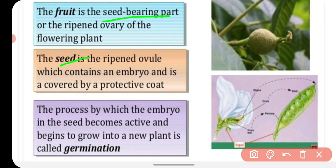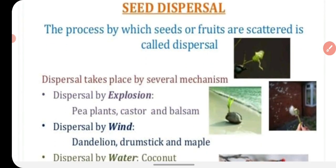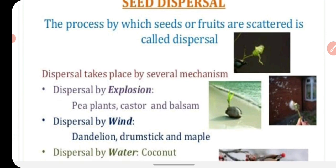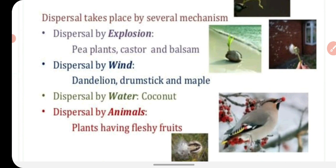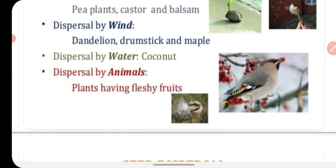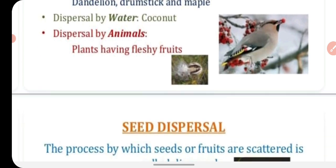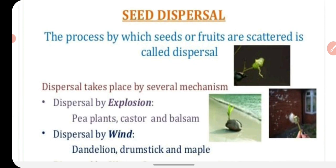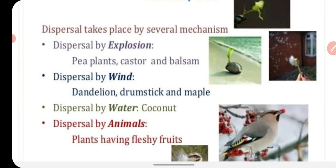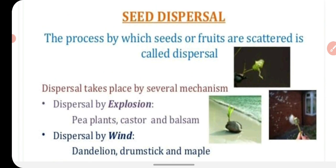Germination is the process by which the embryo in the seed becomes active and begins to grow into a new plant. Seed dispersal is the process by which seeds and fruits are scattered. Dispersal occurs by several mechanisms: by explosion, as in pea plant, castor, and balsam; by wind, as in dandelion, drumstick, and maple; by water, as in coconut, which falls into rivers and is carried away. Dispersal by animals occurs when they eat fleshy fruits and carry seeds from one place to another. The purpose of dispersal is wider distribution of plants, preventing overcrowding and reducing competition.